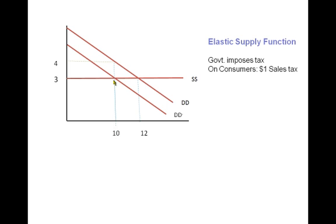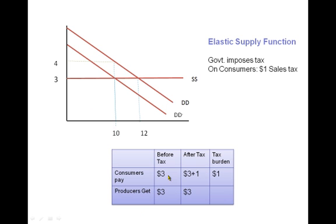Let's look at tax burden. Before taxes, consumers paid $3 and producers got $3. After tax, producers still get $3. And consumers pay the equilibrium price $3 to producers plus $1 to the government. And the tax burden is $1.